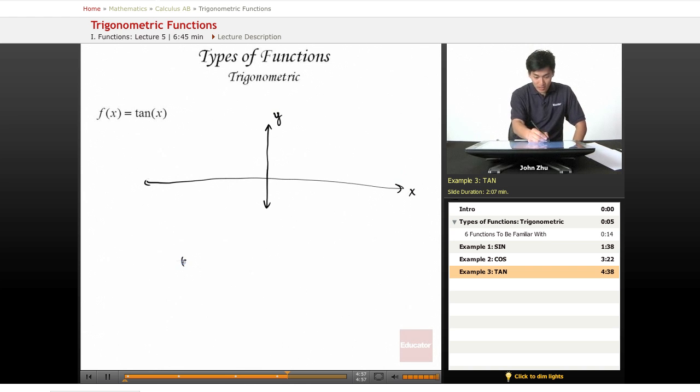So we know that tangent of x is defined by sine of x over cosine of x, and it's basically undefined every time that cosine of x equals 0.